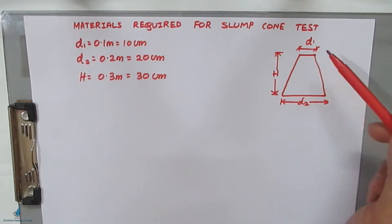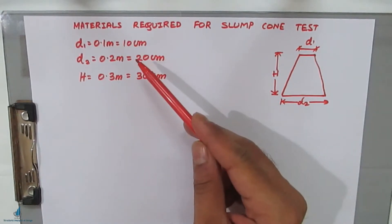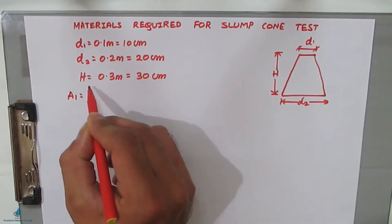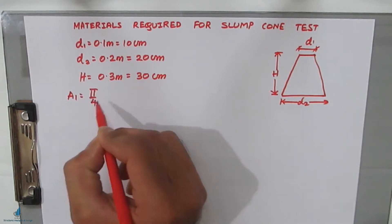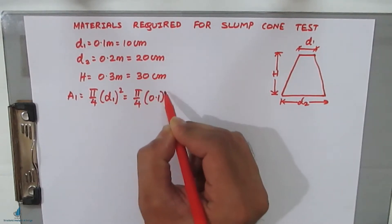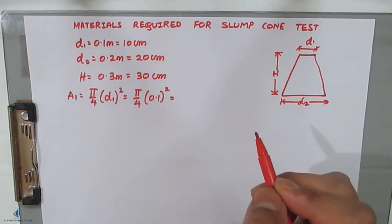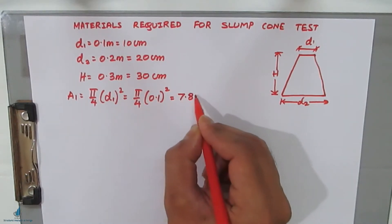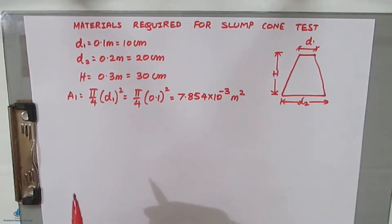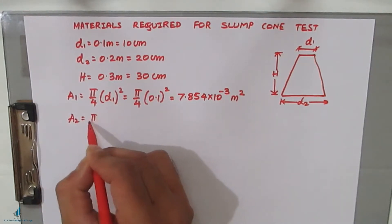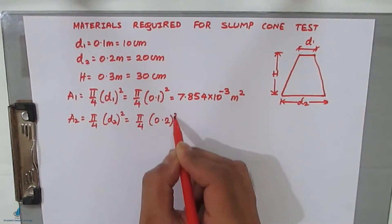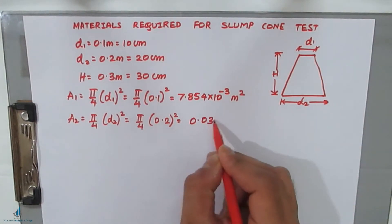Next, we find the areas corresponding to D1 and D2. A1 = (π/4) × D1² = (π/4) × (0.1)² = 7.854 × 10⁻³ m². A2 = (π/4) × D2² = (π/4) × (0.2)² = 0.0314 m². All calculations are taken in meters.